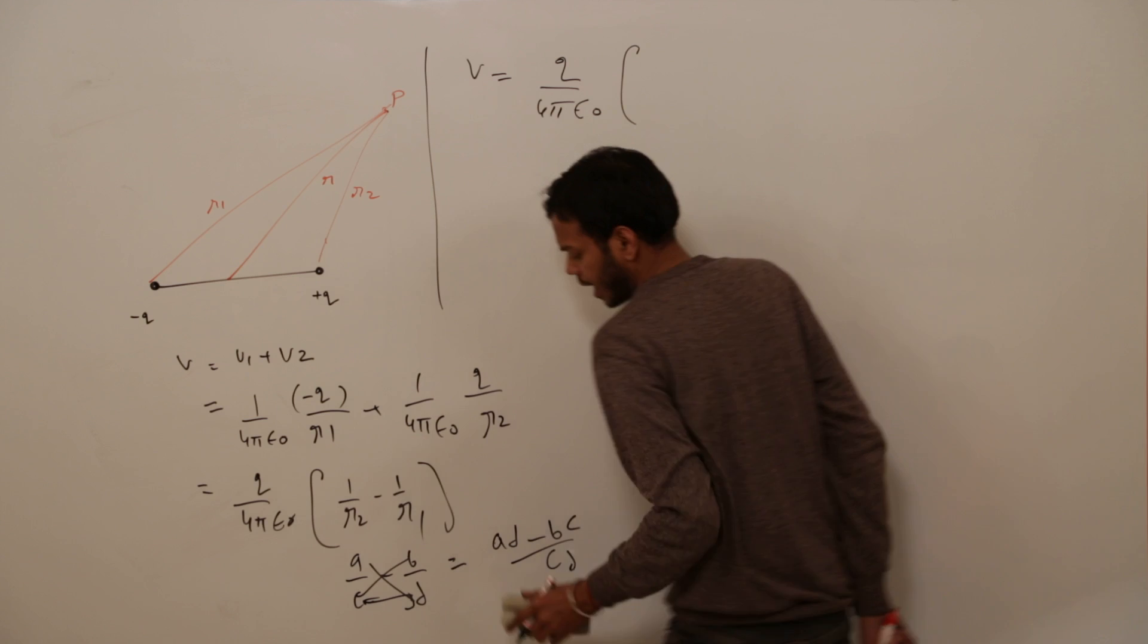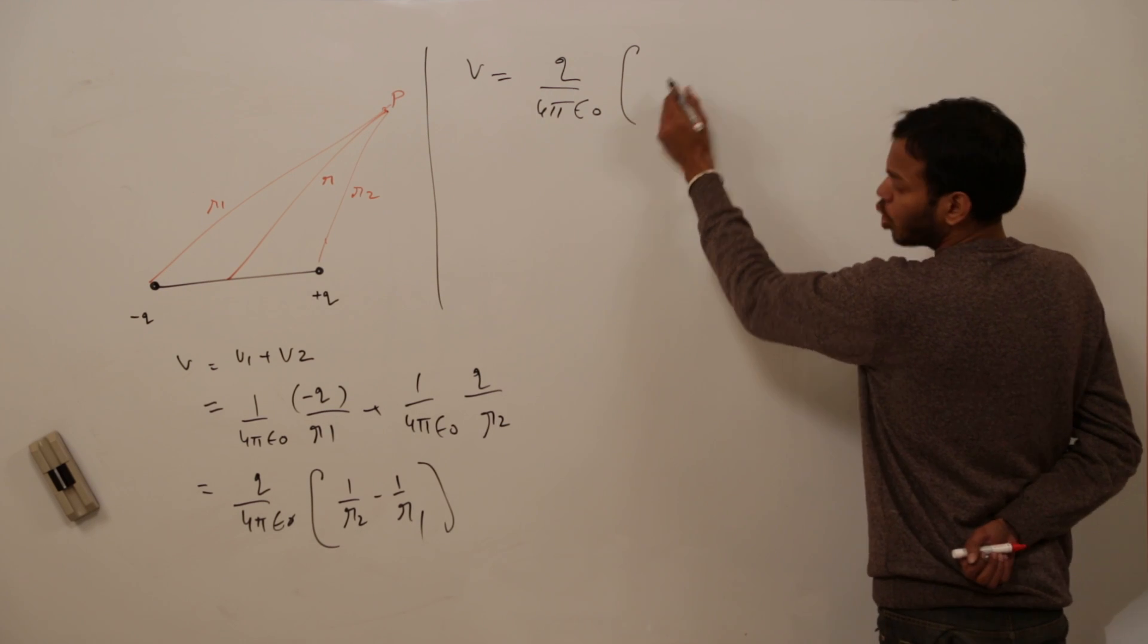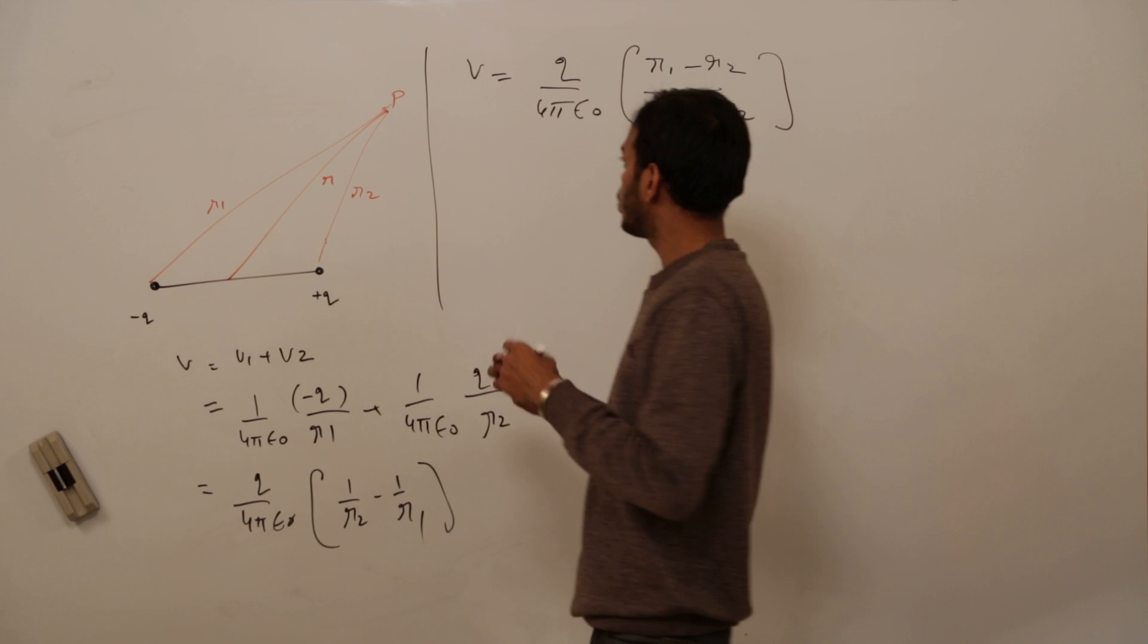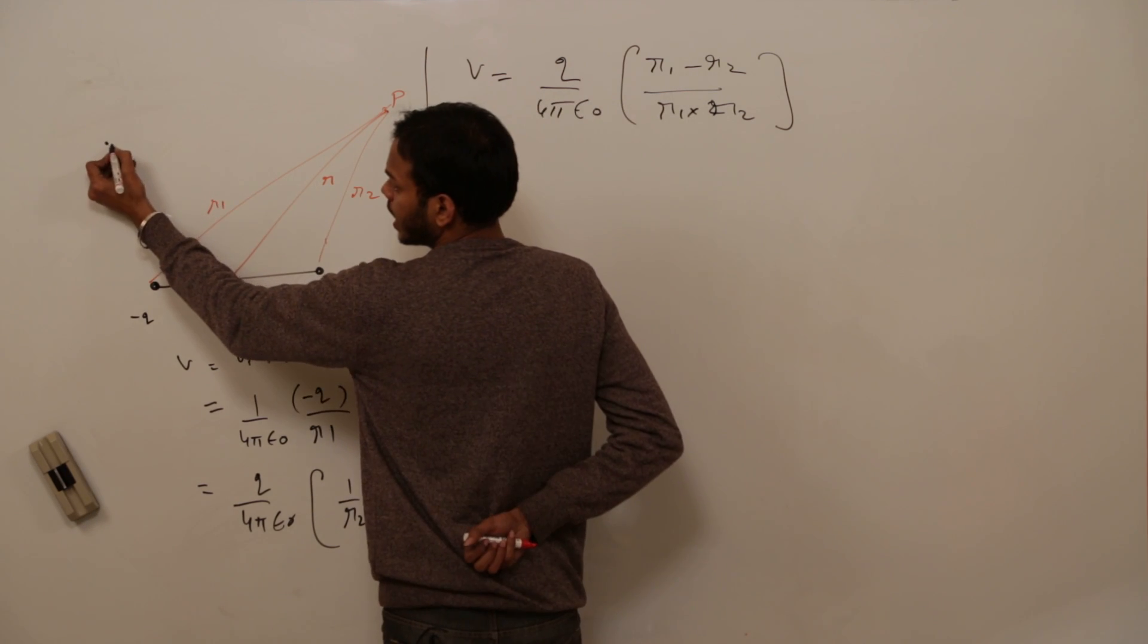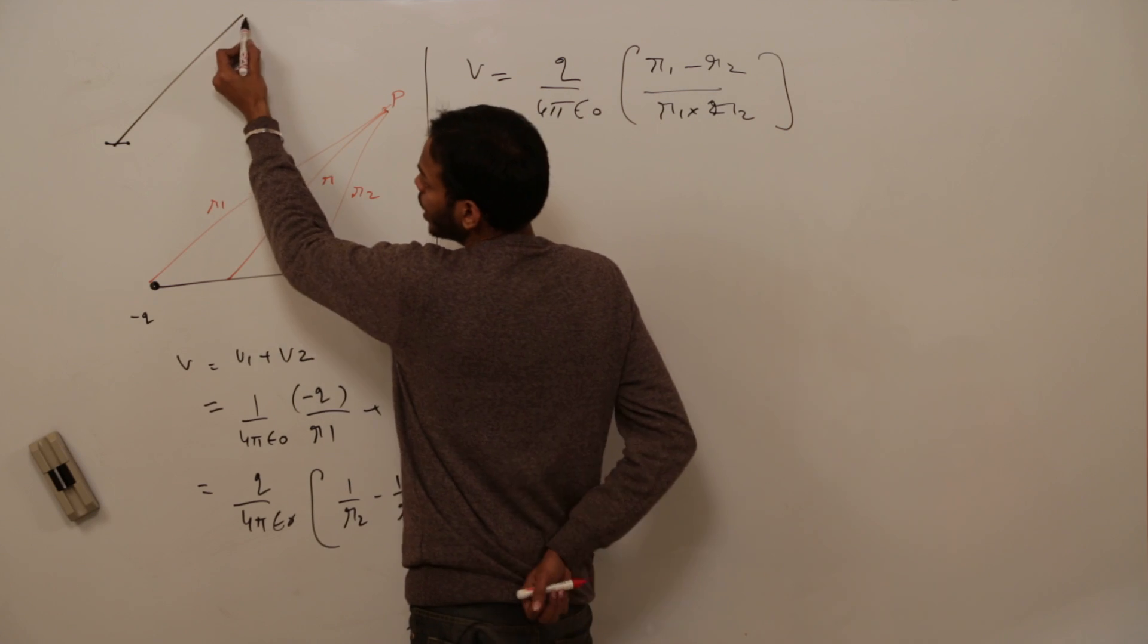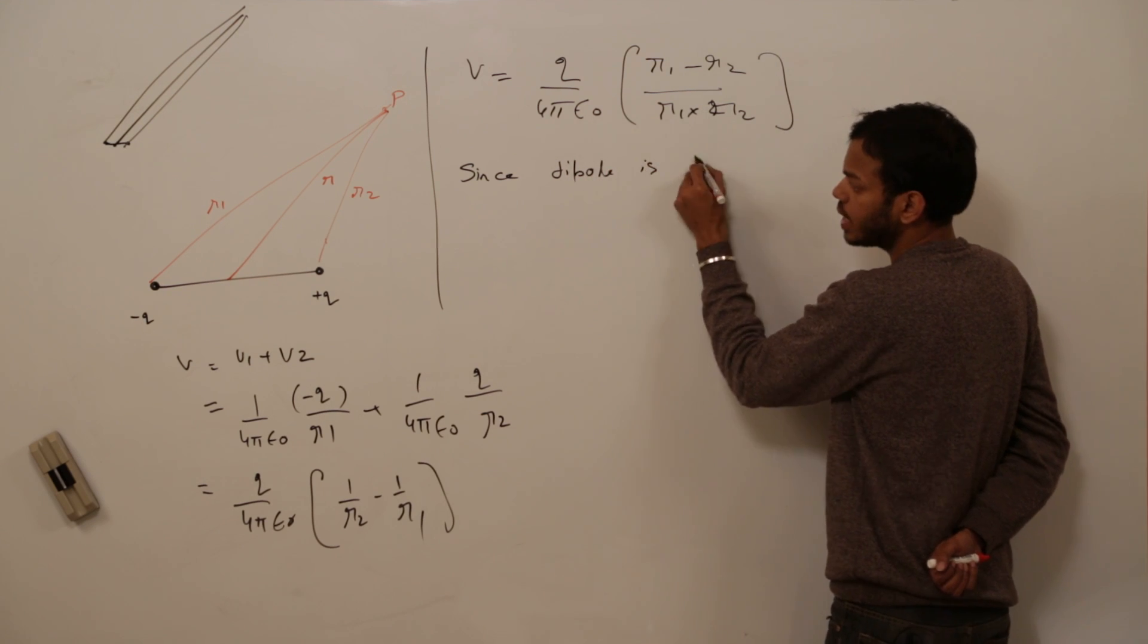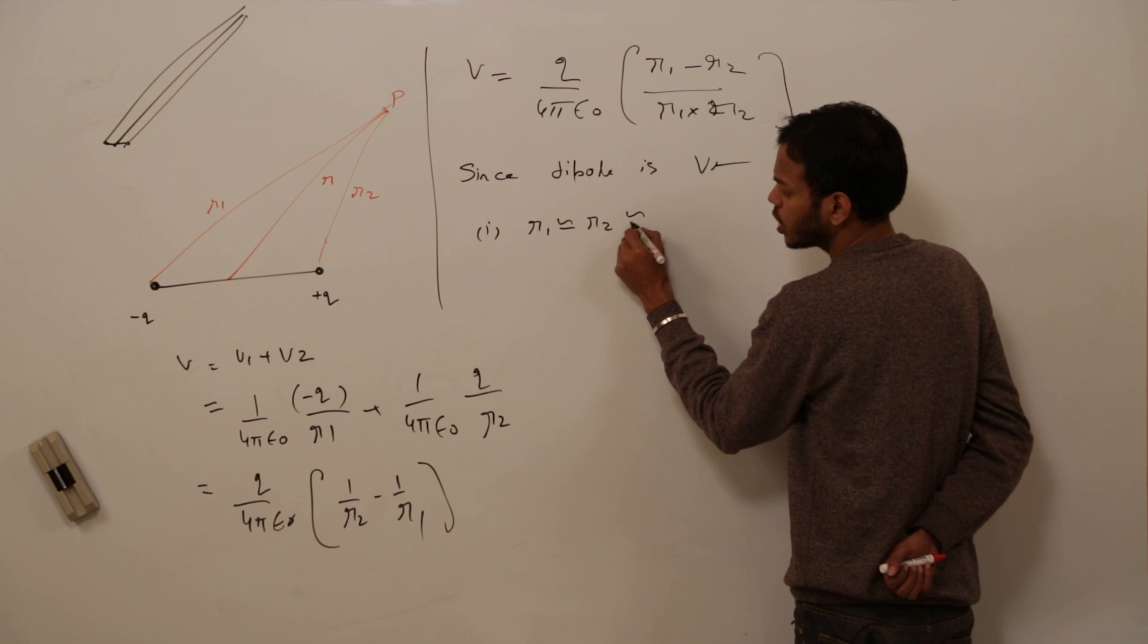You have already done this minus B upon D. These terms are to be cross multiplied and denominators are to be multiplied within themselves. A into D minus B into C upon CD. This was just for general info. So Q upon 4 pi epsilon naught R1 minus R2 upon R1 into R2. See, now I will be using two suppositions which is actually valid in case of dipole. This diagram is actually like this. This is my dipole.